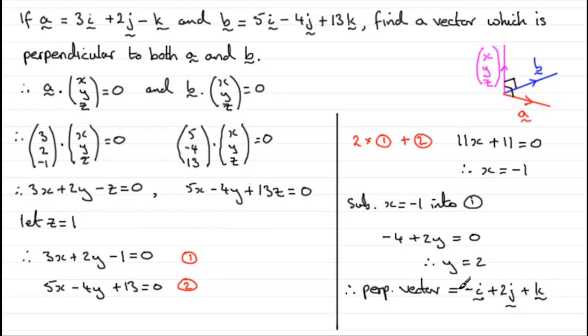Now, any multiple of this would also be perpendicular. So, if I was to double this, like minus 2i plus 4j plus 2k, that would be a perpendicular vector to A and B. So, if you try any value of x or y, or another value of z, you should find that you get a multiple of this vector. So, any of those answers would do. Because it said find a vector which is perpendicular to both A and B. There isn't the vector.